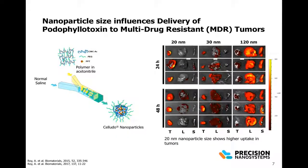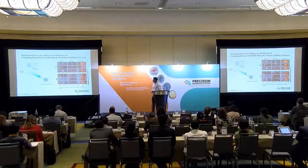What they did was use an acetylated carboxymethyl cellulose backbone as their polymer, and they attached graft sections of either PEG, which is hydrophilic, or their drug podophylotoxin. That formed their polymer in the acetonitrile phase, and then they had normal saline at the other end. They formed nanoparticles of various sizes using the microfluidics platform, ranging from about 20 nanometers to about 120 nanometers.